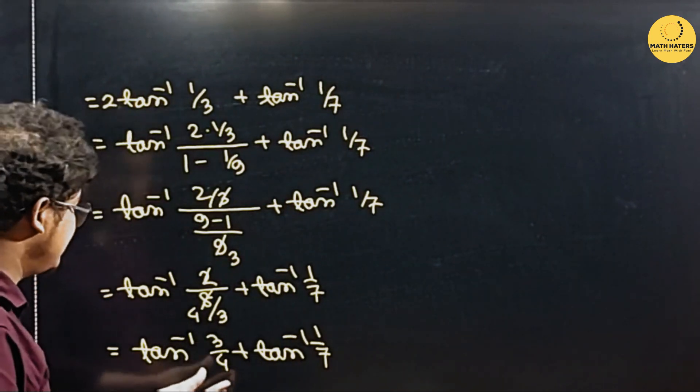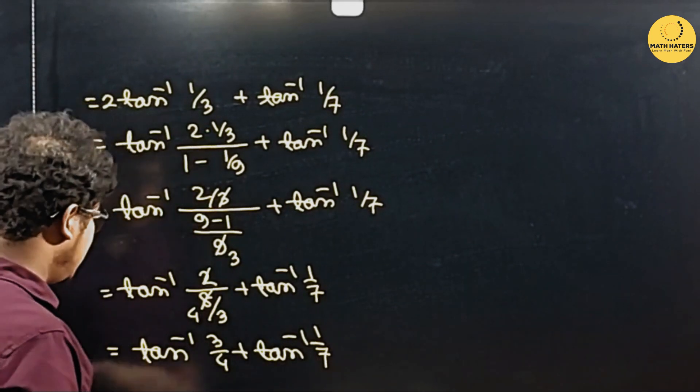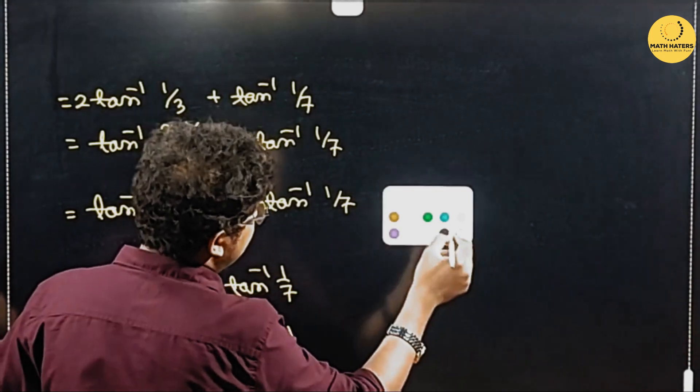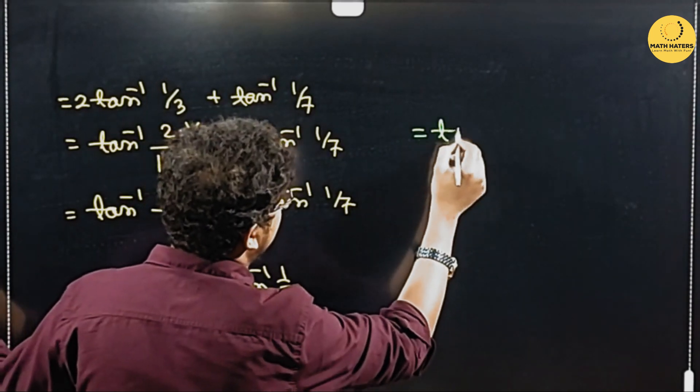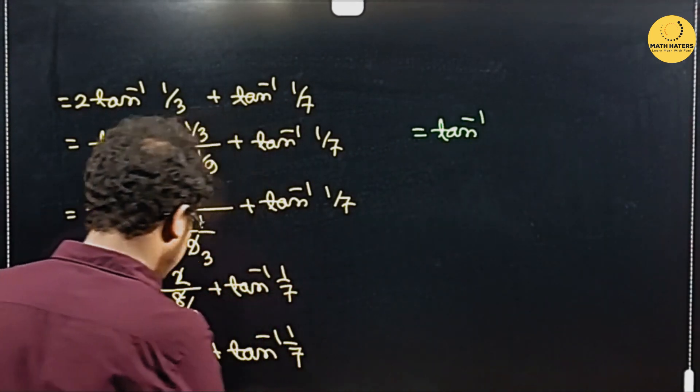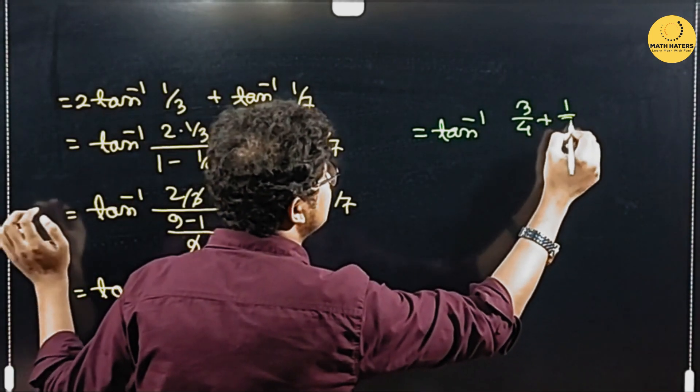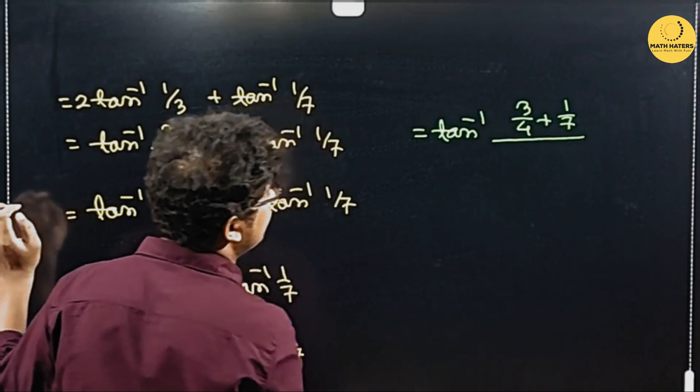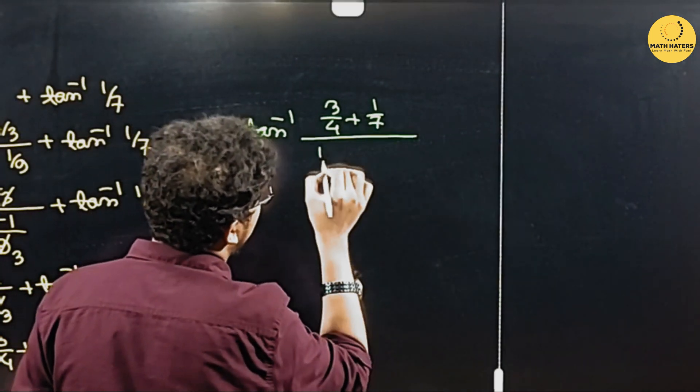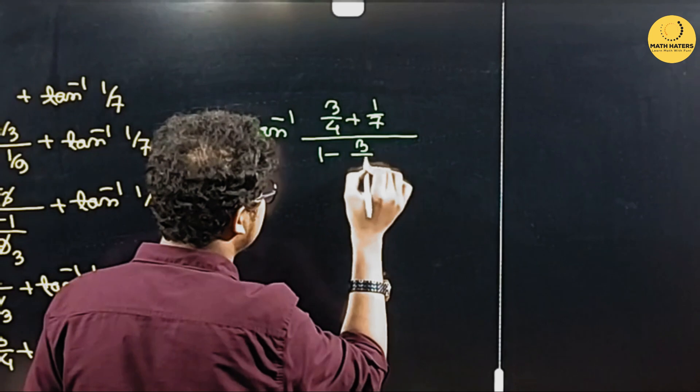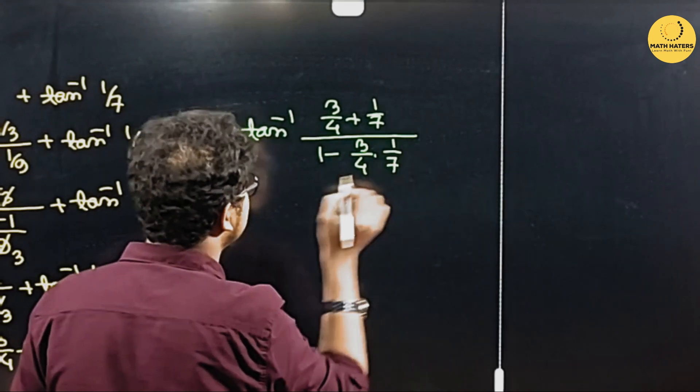So tan inverse x plus tan inverse y, it is tan inverse x plus y, that is 3 by 4 plus 1 by 7, divided by 1 minus xy, 3 by 4, 1 by 7.